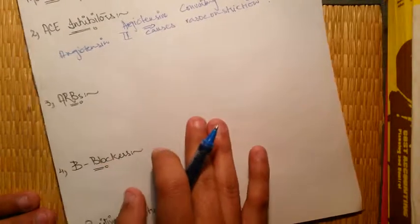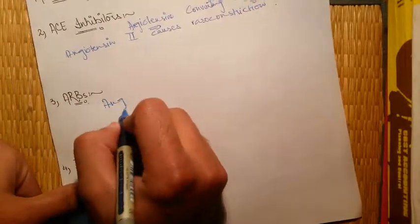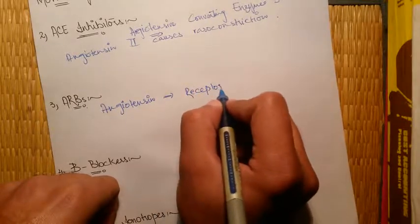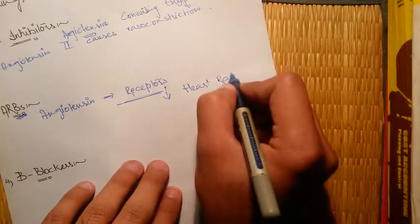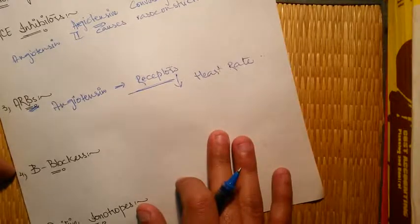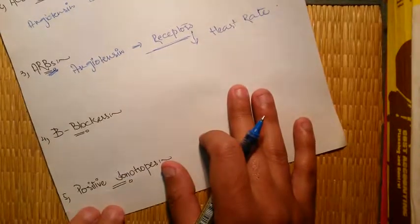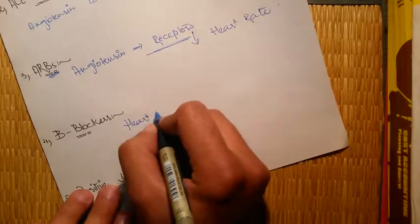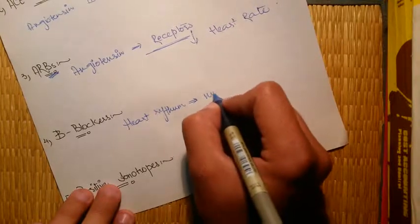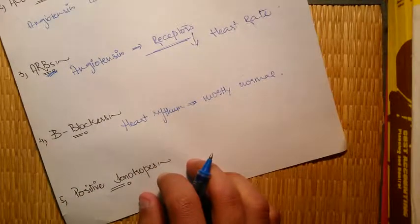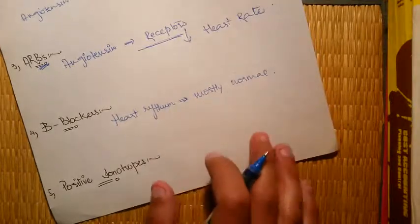The second medication option is ARBs — angiotensin receptor blockers. Angiotensin produced in the body acts on receptors; these drugs block those receptors, decreasing heart rate and blood pressure, which helps in the CCF condition and relaxes the patient. Beta blockers are also given; they mainly act on heart rhythm by binding to norepinephrine, decreasing heart rate and normalizing heart rhythm.